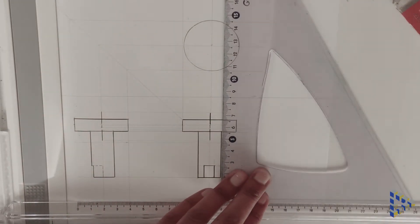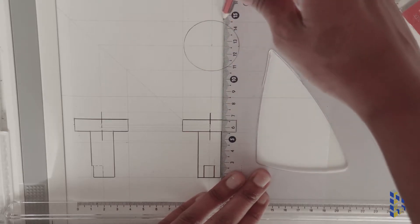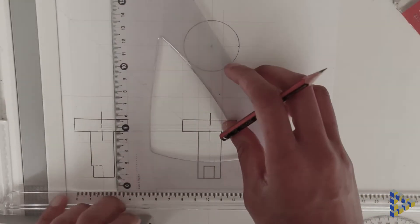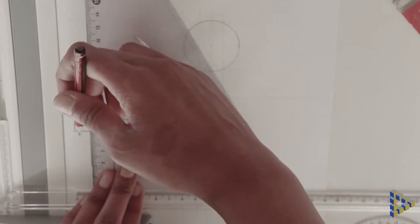Now I draw in construction lines from my front and right side view to be able to draw the cylindrical feature on the bottom view.